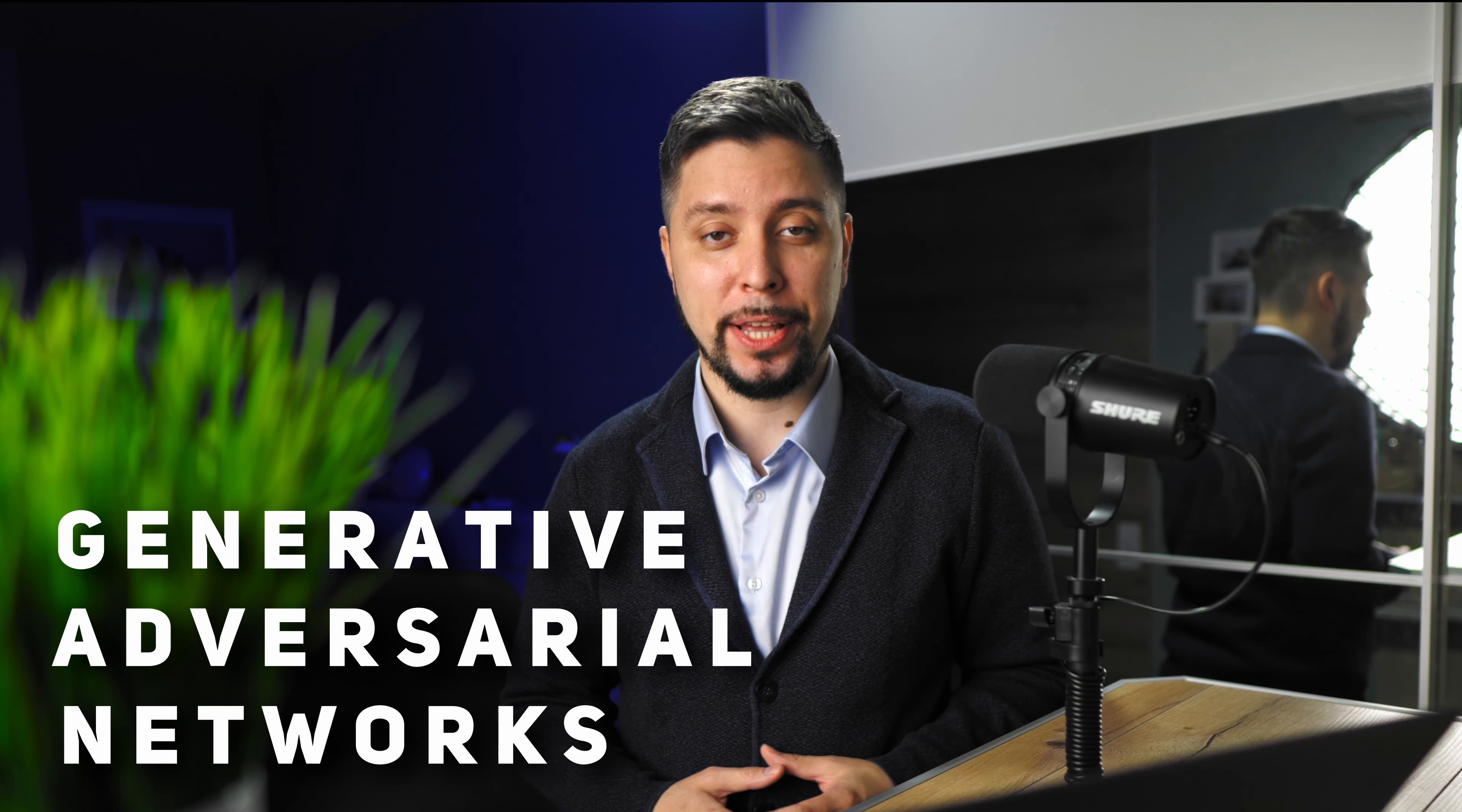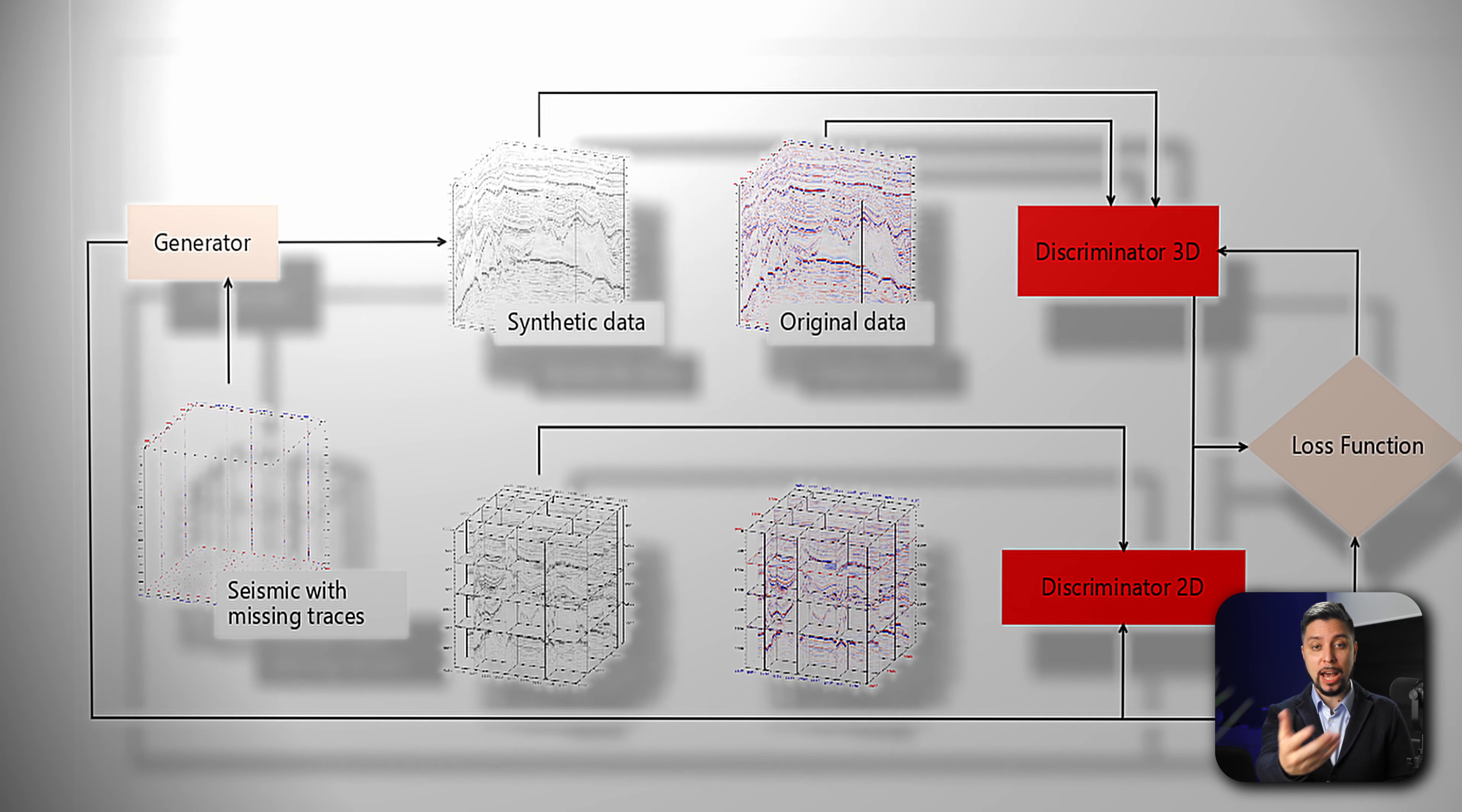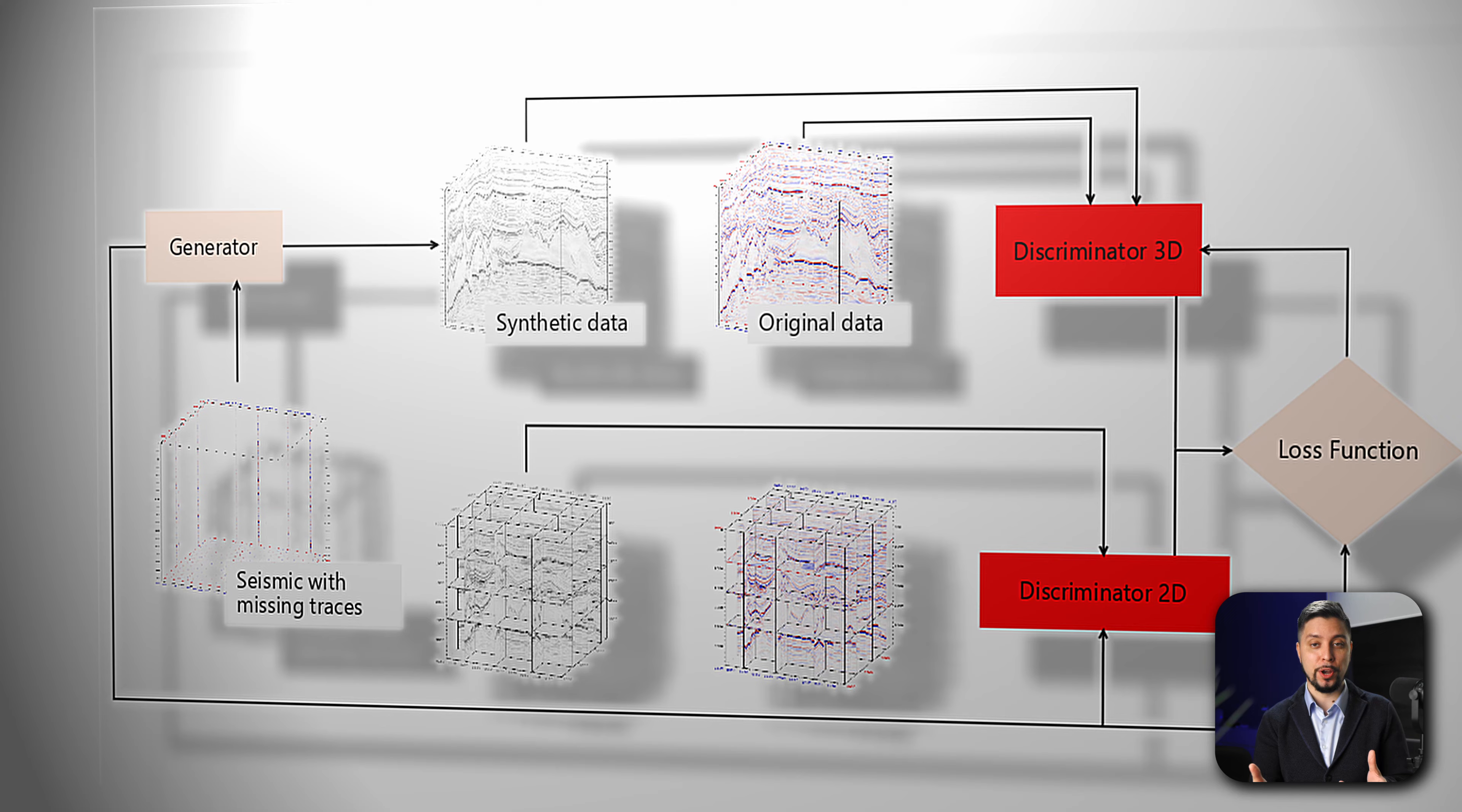On the other hand, GAN-based methods use discriminators to introduce regional or global information into the system, which can be more robust in some situations. But keep in mind, the performance of each method depends on the task and the data.